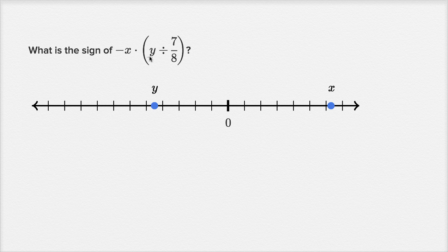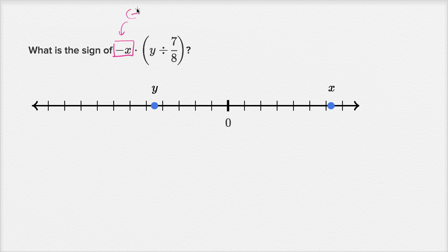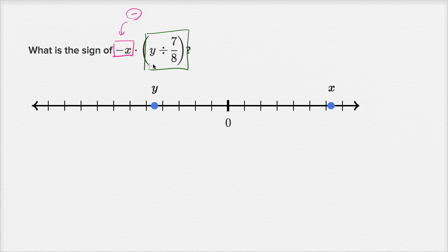What is the sign of negative x times y divided by 7-eighths? From the number line, x is positive and y is negative. x is positive, but negative x is going to be negative. y is negative, divided by 7-eighths which is positive, so y over 7-eighths is negative. We have a negative times a negative, so the whole expression is going to be positive.